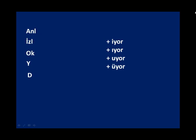So we erase the final vowels and get: anl, izl, ok, y, d. We omitted the vowels, and now we add the suffixes. So we get: anlıyor, izliyor, okuyor. And now with 'yi', 'ye', and 'de' — we don't have any vowel to make vowel harmony with. So we just use the neutral form: '-yor'. So it becomes: yiyor and diyor.